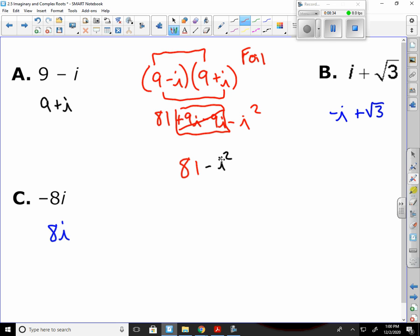If you remember, the square root of negative 1 is i, so it works backwards as well. If I have an i squared, i squared equals negative 1. So now I can just make that a negative 1. So it's 81 minus negative 1, which will become 82. And that would be your answer for the complex conjugate here.